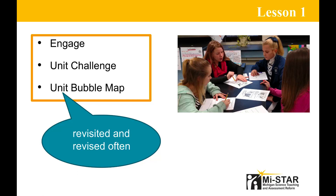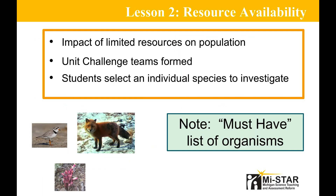The unit bubble map will be revisited and updated during the unit, reflecting the greater understanding students achieve as they progress through each lesson. For Lesson 2, students explore how limited resource availability influences individuals and the growth of populations through a class activity using a limited resource — packing peanuts or mini marshmallows. Students are also assigned to their unit challenge ecosystem teams. Each student chooses an organism from their team's ecosystem and is provided the appropriate fact sheet. Note that Lesson 2 has a list of organisms that must be included, which is important if your group sizes are small.